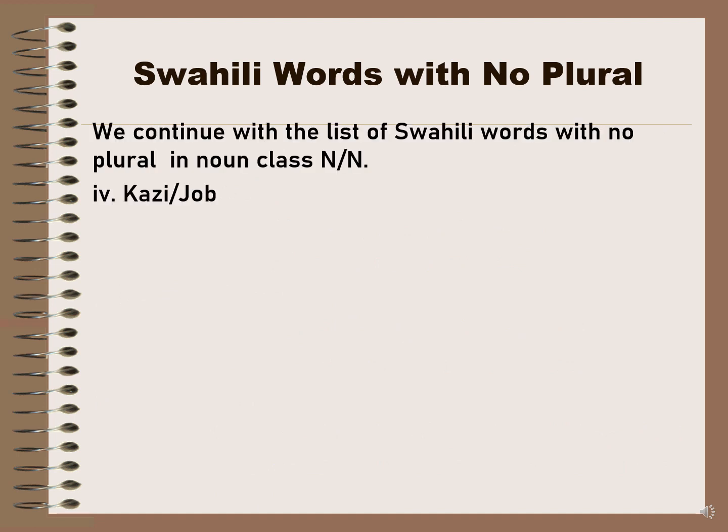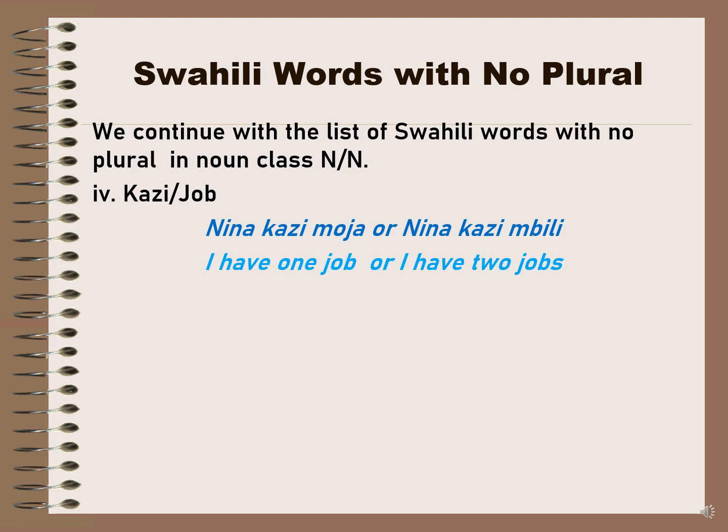Continuing with the list: 'kazi' means job. 'Nina kazi moja' or 'nina kazi mbili' — both use 'kazi,' but the meaning is different depending on how you use it. 'Nina kazi moja' means I have one job; 'nina kazi mbili' means I have two jobs. In English, job and jobs are different — jobs has an 's' at the end — but in Swahili, 'kazi' does not change.